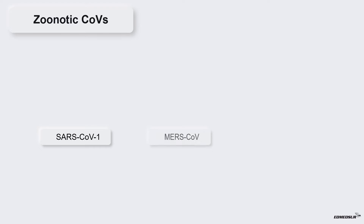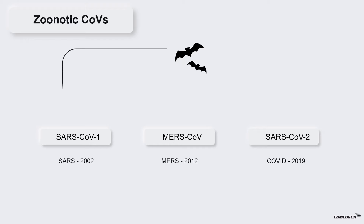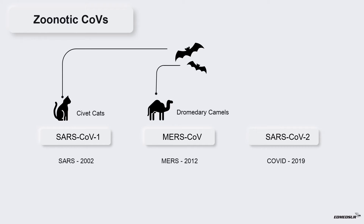There are three strains of zoonotic human coronaviruses: SARS-CoV-1, MERS-CoV, and SARS-CoV-2. They have been responsible for three large-scale outbreaks in the past two decades, including Severe Acute Respiratory Syndrome in 2002, Middle East Respiratory Syndrome in 2012, and Coronavirus Disease in 2019. These three viruses most likely emerged from bats and were transferred to humans via an intermediate host. For SARS, the intermediate hosts were civet cats; for MERS, they were dromedary camels. In COVID-19, it is widely believed that the virus jumped from bats to pangolins and then to humans.